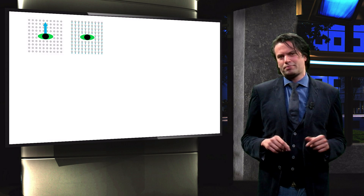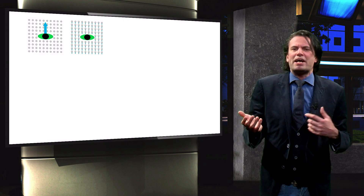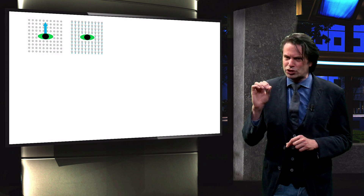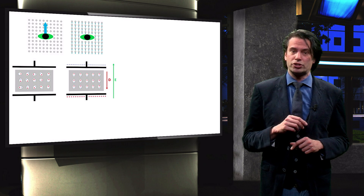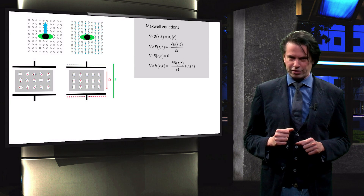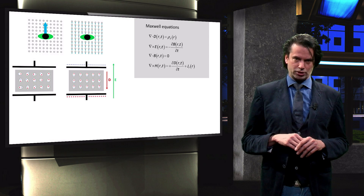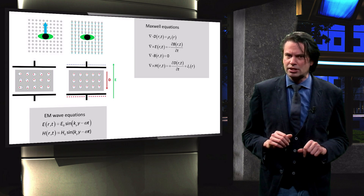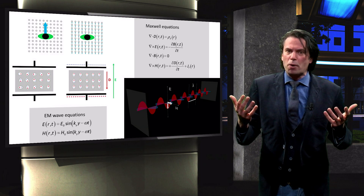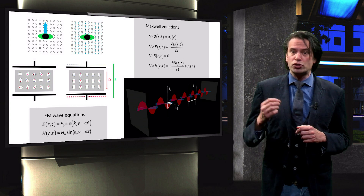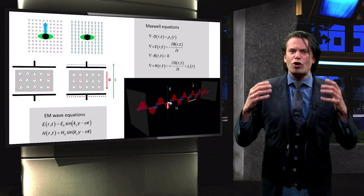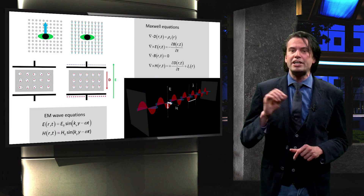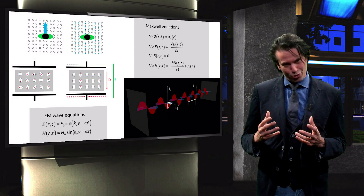As a recap, we saw how electricity and magnetism are two sides of the same electromagnetism coin. We discussed the concept of displacement and induction, and saw how these concepts affect the magnetic and electric field strength through the Maxwell equations. From the Maxwell equations, we derived the electromagnetic wave equations, and we saw how the electromagnetic wave propagates through oscillations in electric and magnetic fields. With all of this in mind, we can now continue onto different optical phenomena and specifically how they relate to solar cells.